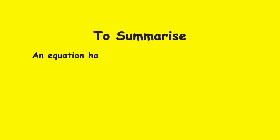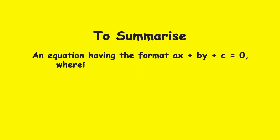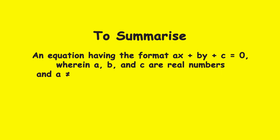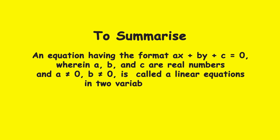To summarize, an equation having the format Ax plus By plus C is equal to 0, wherein A, B, and C are real numbers and neither A nor B is equal to 0, is called a linear equation in two variables x and y.